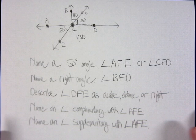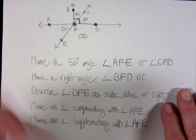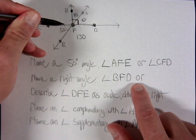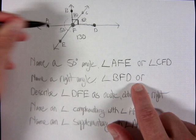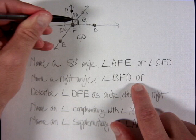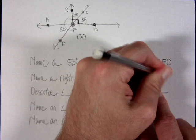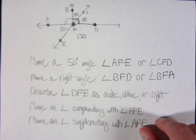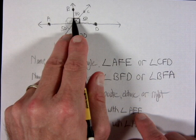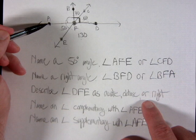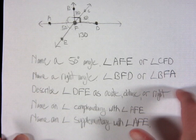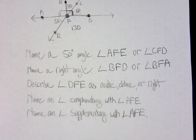There is a second 90-degree angle. Since a straight angle is 180 degrees, and one side of it is 90 degrees, the other side must also be 90 degrees. So angle BFA is also 90 degrees — it's a right angle. Reversing it, angle AFB is the same angle. These are two separate correct answers.